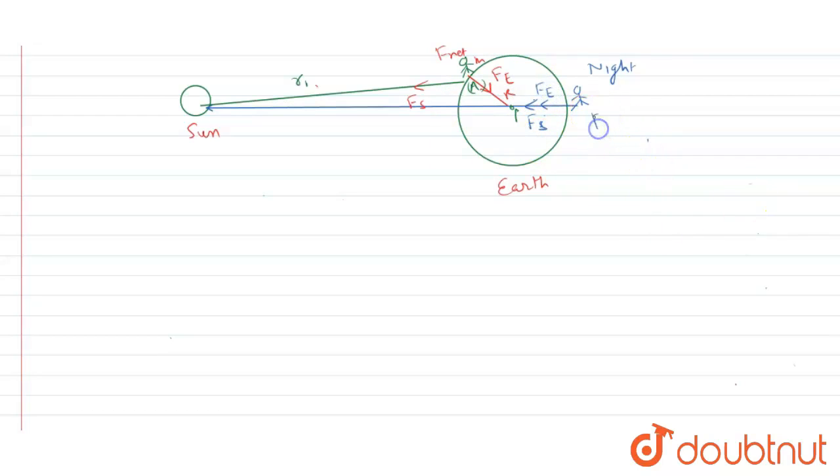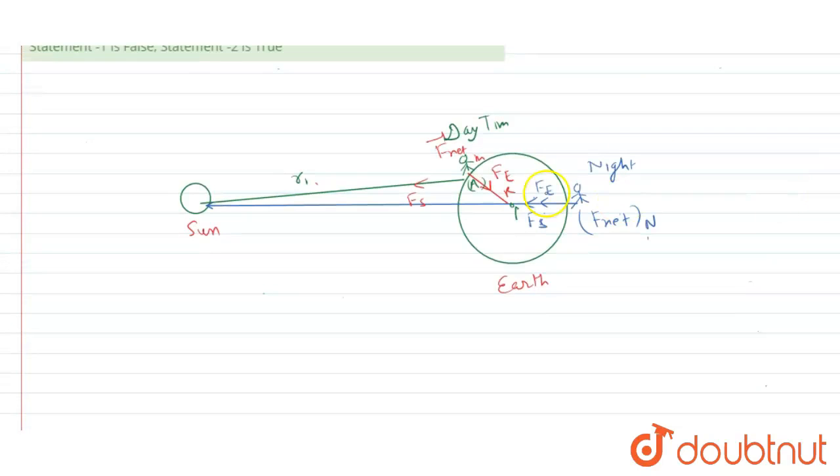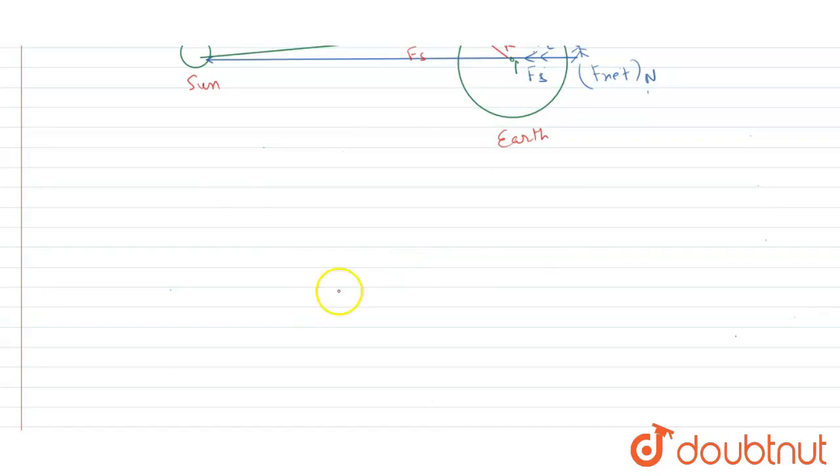So this is F_net, I can write it is in case of night, and this is F_net in day. So from here we can say that F_net in day, which is nothing but weight on person, F_net in day can be written as F due to Earth minus F due to Sun.